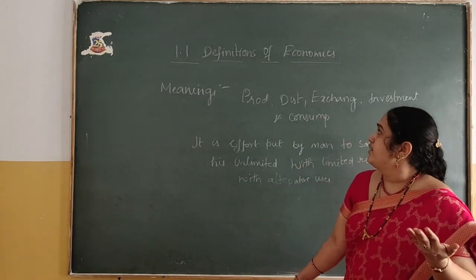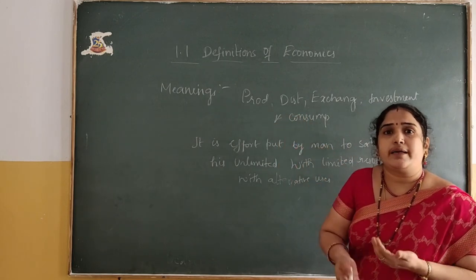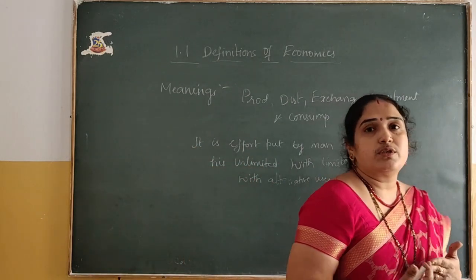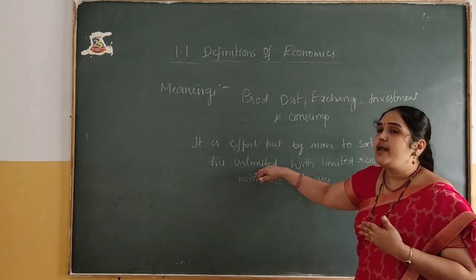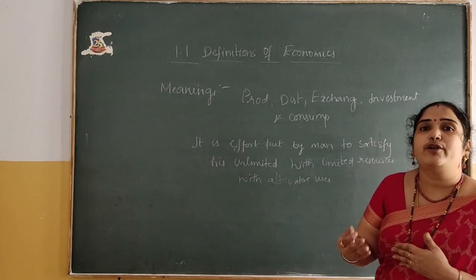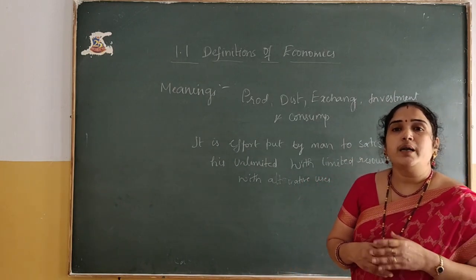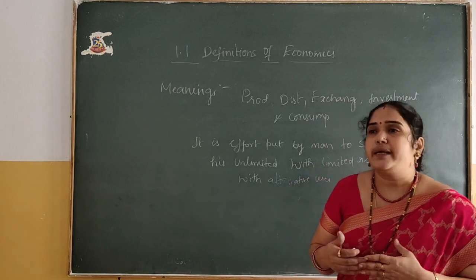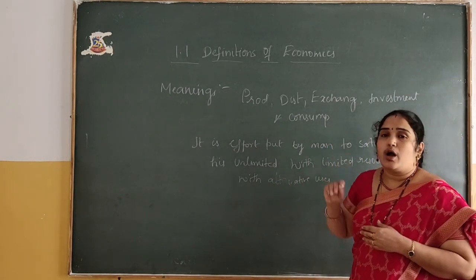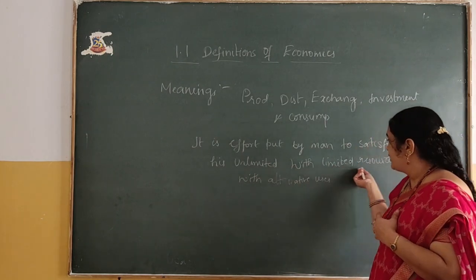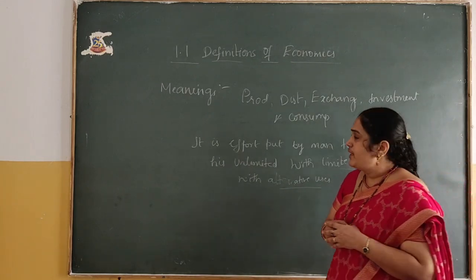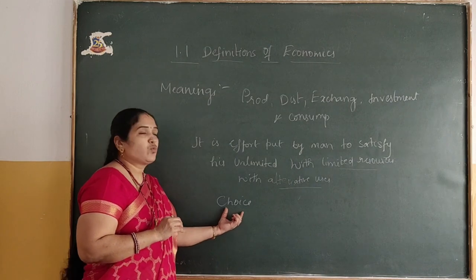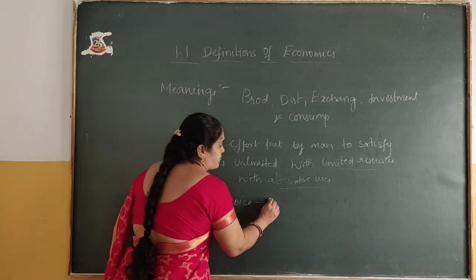Economics deals with economic activities. People are engaged in different activities like business, trade, agriculture, and so on. We have to see how they satisfy their unlimited wants through the activities they are involved in to earn money. Man's main motto is to earn money, and every organization works to earn profit in the form of money. As we have limited resources and have to put them into alternative uses, there comes a problem of choice — what wants have to be satisfied first.